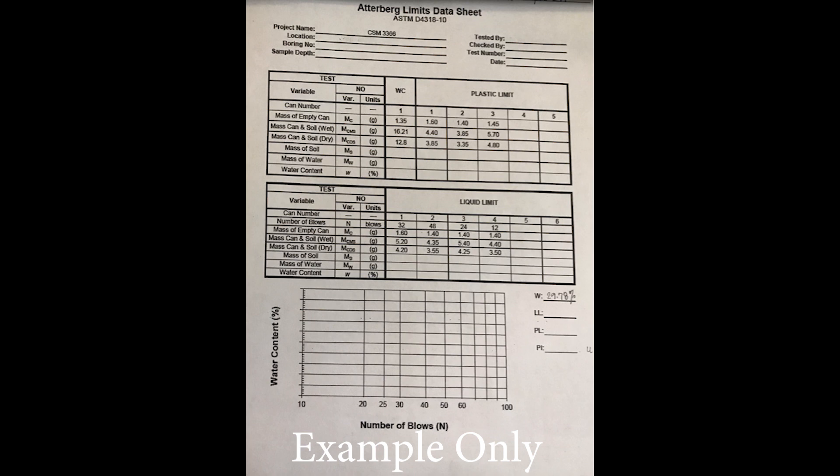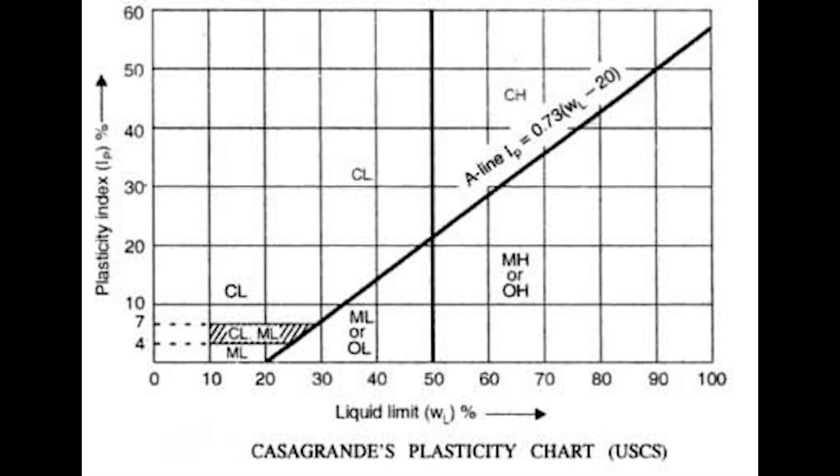Then we will take the average of the plastic limit samples to get the plastic limit. We will take the liquid limit minus the plastic limit to get the plasticity index, and plot that against the liquid limit to classify the soil type on the plasticity chart.